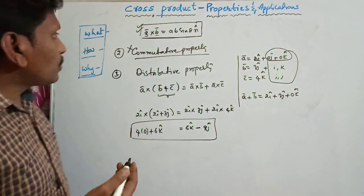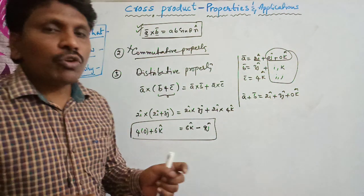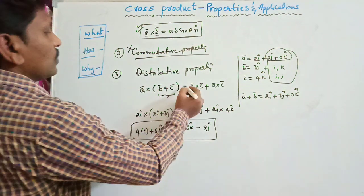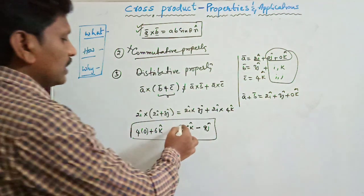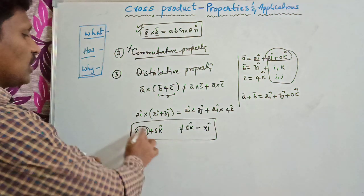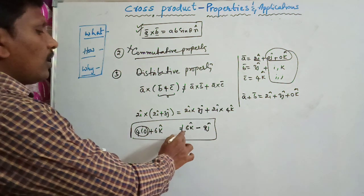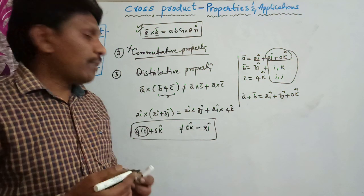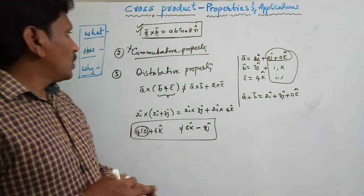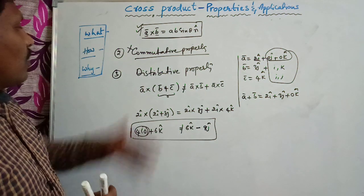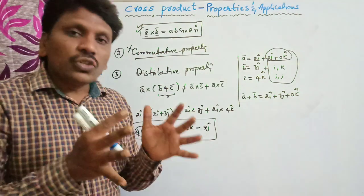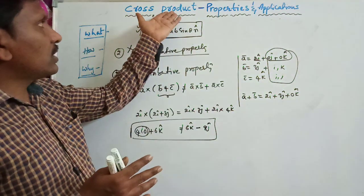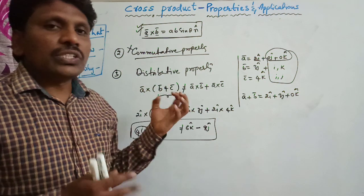So the cross product does obey the distributive property. And the fourth property — the associative property — the cross product does not obey the associative property.